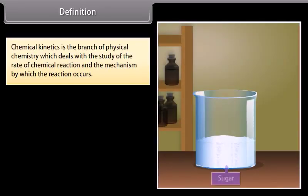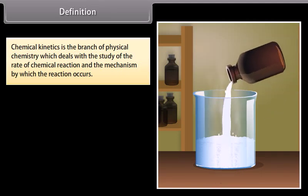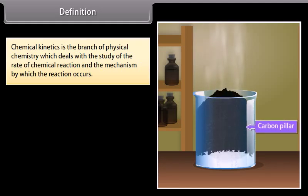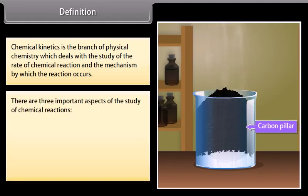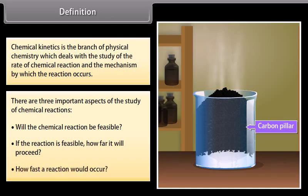Chemical kinetics is the branch of physical chemistry which deals with the study of the rate of chemical reaction and the mechanism by which the reactions occur. There are three important aspects of the study of chemical reactions: will the chemical reaction be feasible? If the reaction is feasible, how far will it proceed? How fast a reaction would occur?